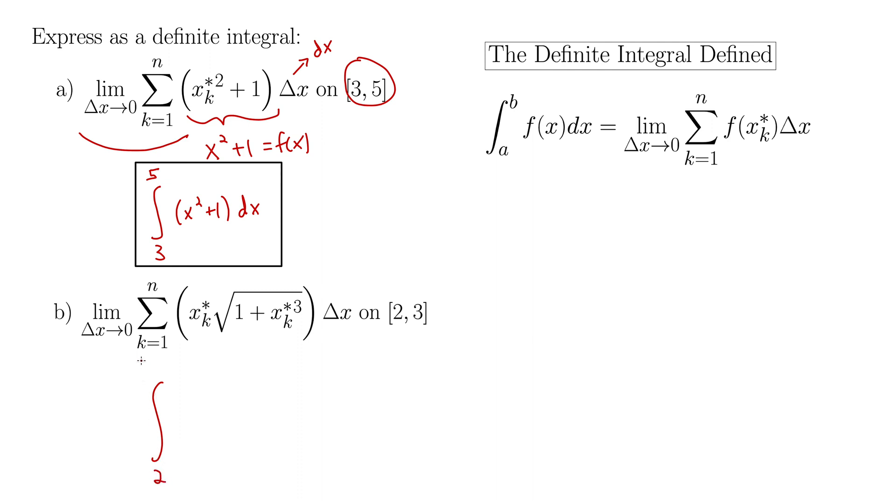and then we have x_k star which becomes x so that gives us x times the radical of 1 plus x cubed and then all of that is dx instead of delta x.